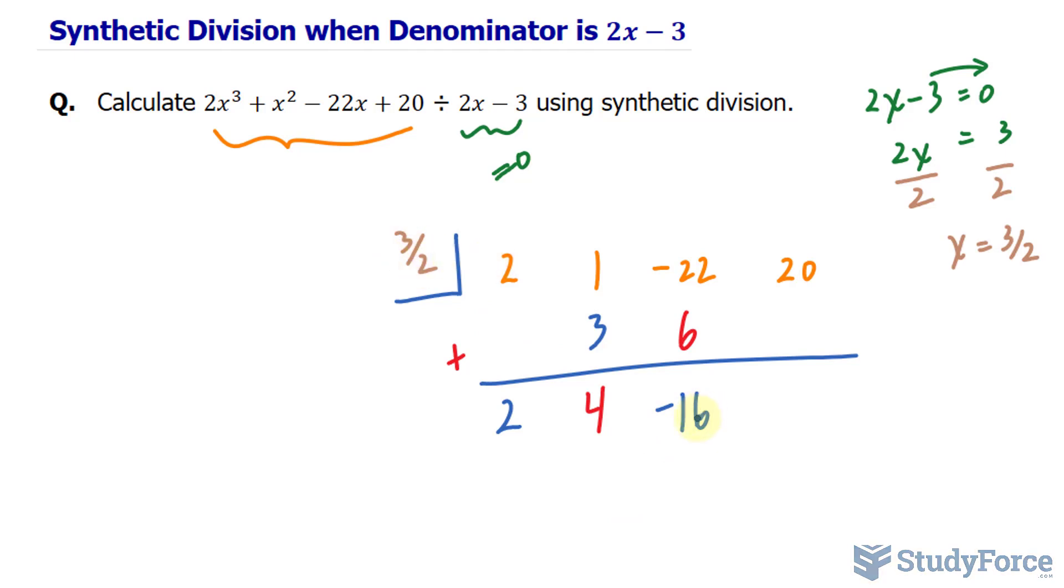3 over 2 times negative 16. That makes negative 24. Adding 20 and negative 24 together combines to negative 4.